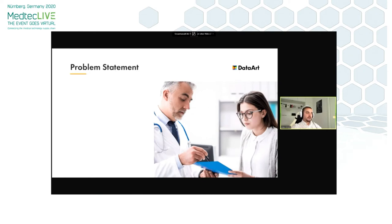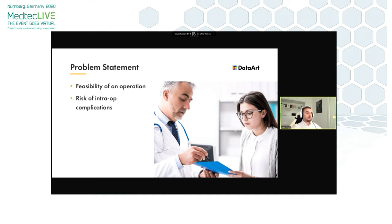Let's start with the problems that surgeons might have to deal with before and during operations. Before performing a surgery, it is important to assess its feasibility to avoid possible risks. This means surgeons have to first make a decision if a particular operation can be performed under given circumstances. Yet another risk is intraoperative complications that can occur unexpectedly, which leads to longer surgery and hospitalization time.